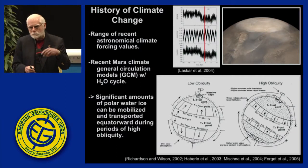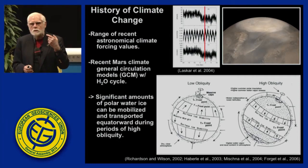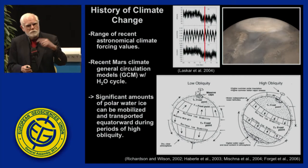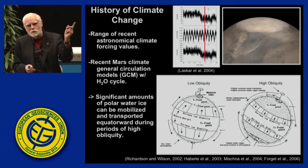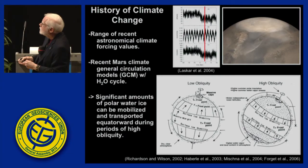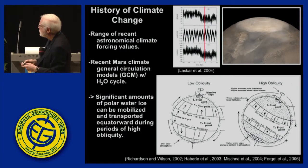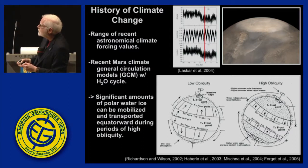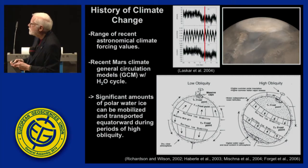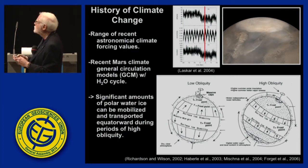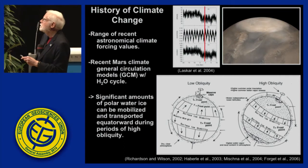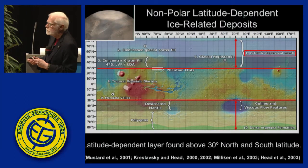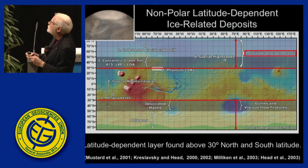Mars does not have a big moon like the Earth, so its obliquity is free to go to 70 or 80 degrees. Significant amounts of polar water ice can be mobilized and transported equatorward during periods of higher obliquity. We've been on a quest for more than a decade to look at non-polar latitude-dependent ice-related deposits — deposits related to tropical mountain glaciers, mantles on the surface, possibly glaciated terrain. An orbital roughness map reveals orange-textured material from 30° north and south latitude to the poles, indicative of a mantle of debris-covered ice dating to the last few million years.